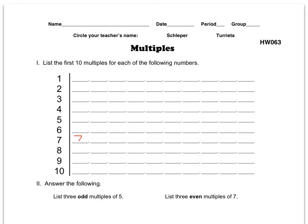I'm going to do 7, so I got 7, 14, 21, 28, 35, 42, 49, 56, 63, and 70. Okay, so those are the first 10. Those are the first 10 multiples for the number 7.